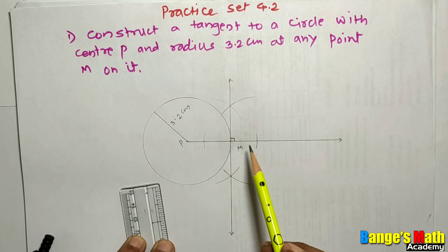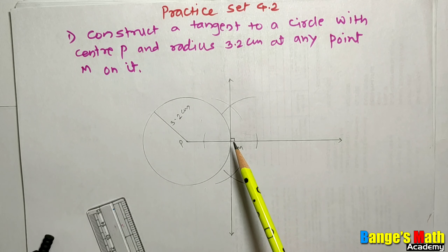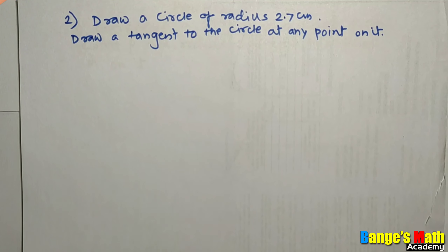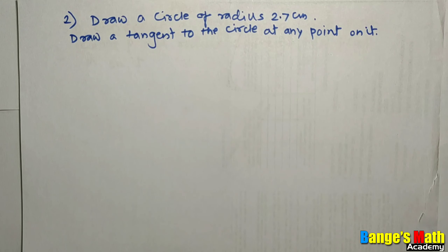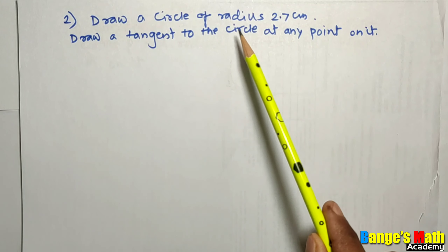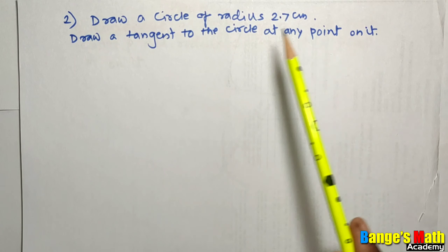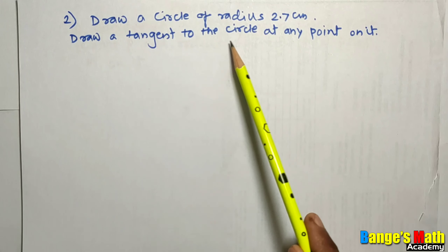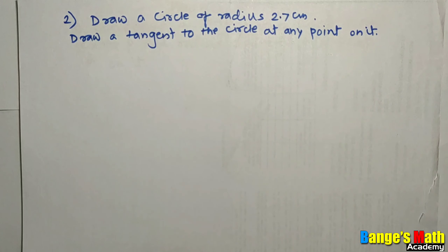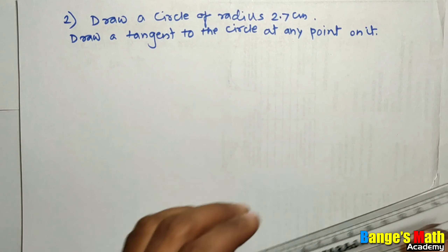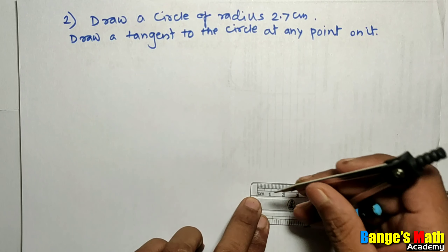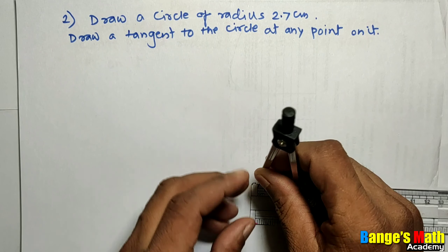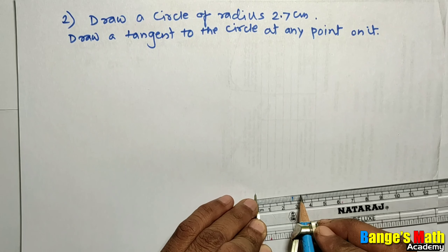Second example: draw a circle of radius 2.7 cm and draw a tangent to the circle at any point on it. The radius of the circle is 2.7 cm. Take distance 2.7 cm in your compass.